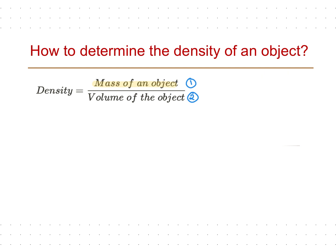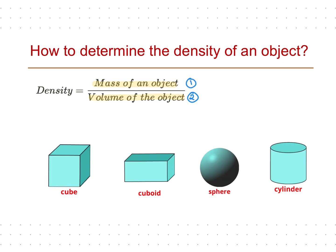Next, how do we measure the volume of an object? If the object is a regular or symmetrical shaped object, such as a cube, cuboid, sphere, or cylinder, we can use mathematical formulas to determine its volume.